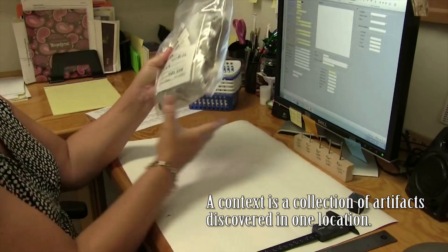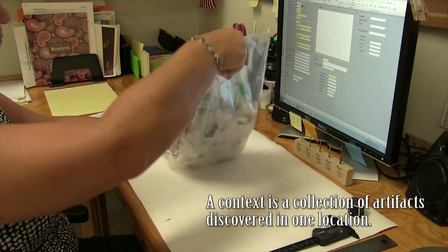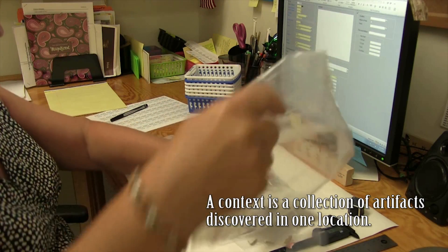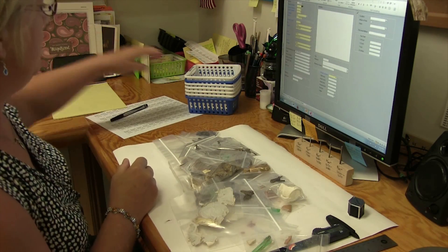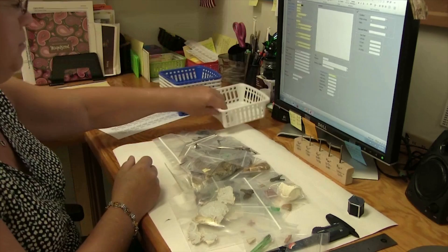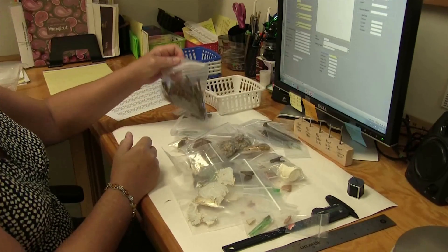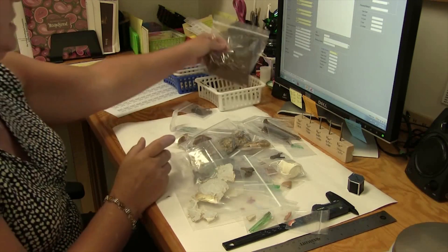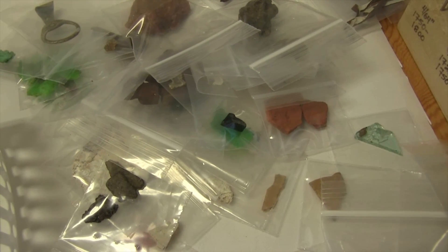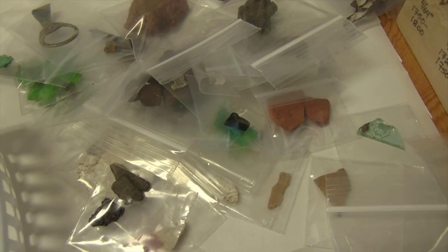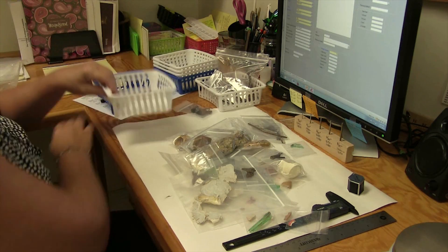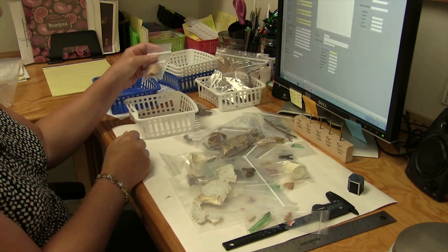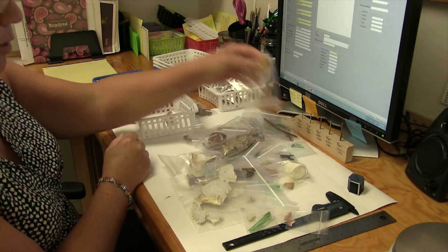The first thing I do is I take everything out of the bag and I sort it by material. So I'm going to put all the metals that are in the context together, all the glass together. We also have bone and faunal material - we have bones, we have seashells, oyster shells.